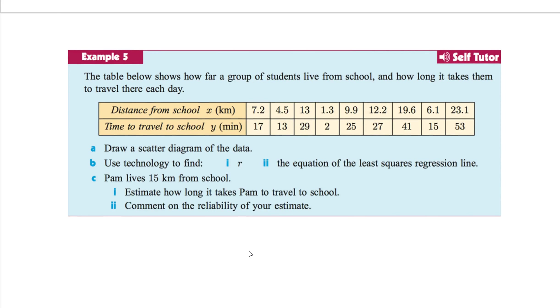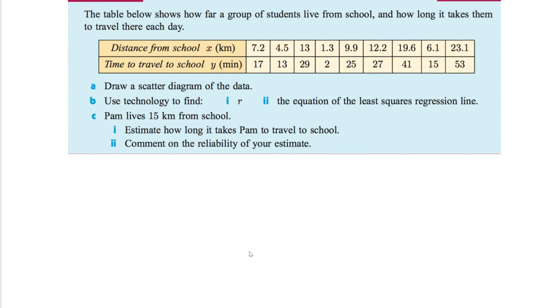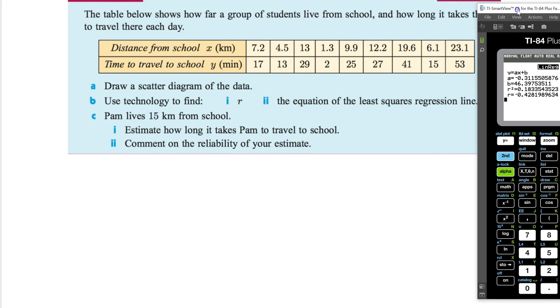So let's finish this off with a quick example. The table below shows how far a group of students live from school and how long it takes them to travel there each day. So distance from school. Time to travel to school. They want me to draw a scatter diagram. Doing my calculator. We're going to find the equation of a line and the R on the calculator. And then we're going to, so obviously with our new information, we're going to solve this little question. So let's do this on our calculator. Again. I'm going to bore you. I'll plug this in right now. And voila. All the data is entered in.